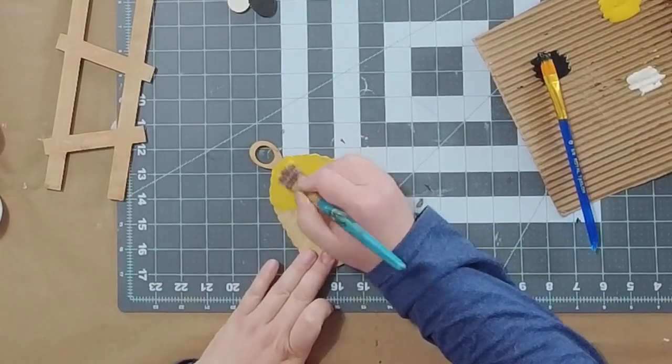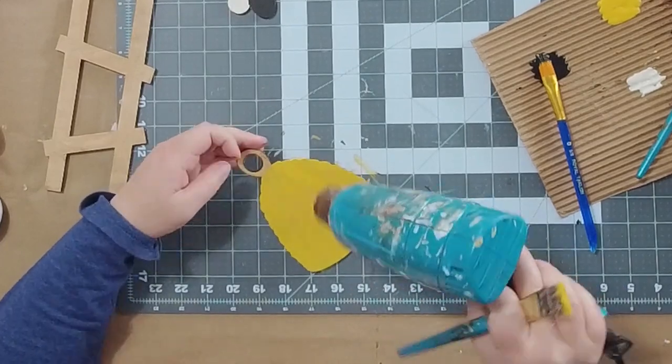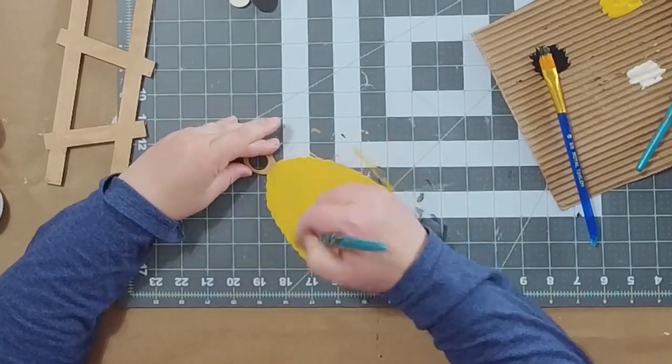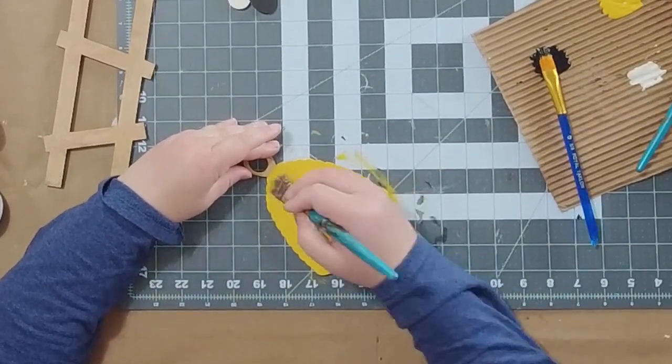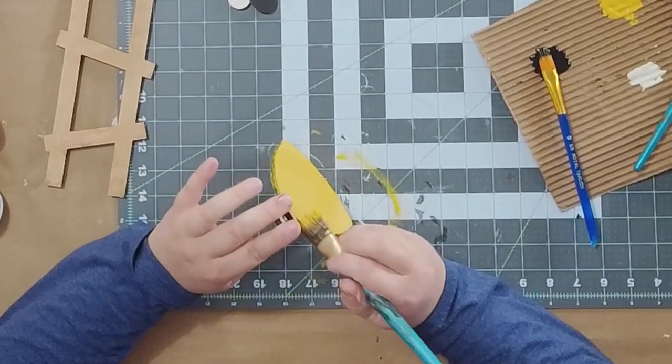We're going to make sure that stain is nice and dry, and then we're going to come over to the beehive and just paint the bottom half. We're using the color King's Gold, and I believe that's an Apple Barrel paint that I got at Walmart.